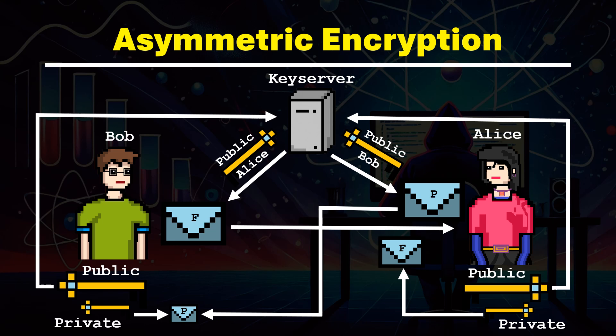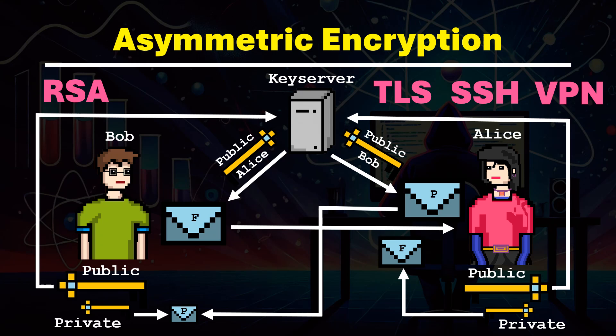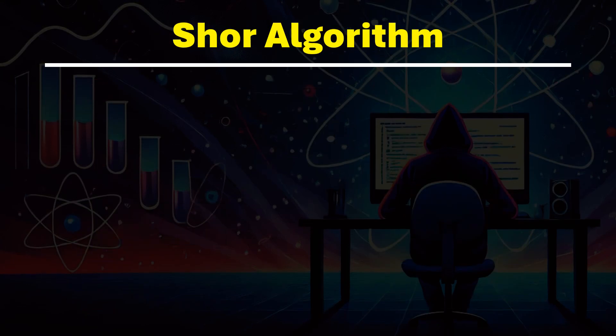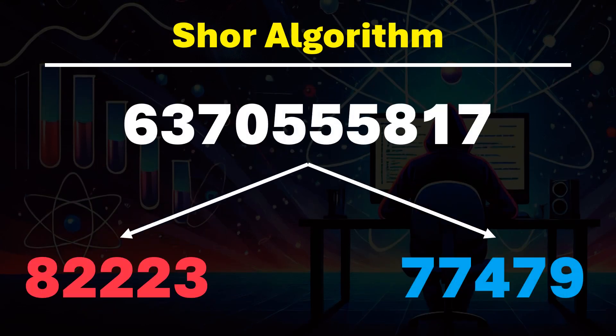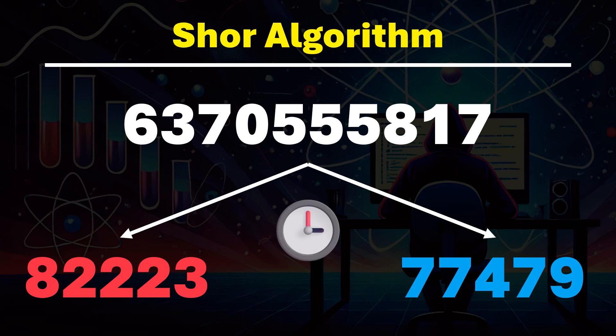A well-known asymmetric encryption technique is the RSA algorithm, which appears in many contexts and protocols like TLS, SSH, various VPN protocols, IPsec, and more.